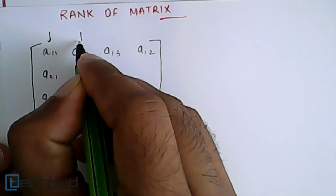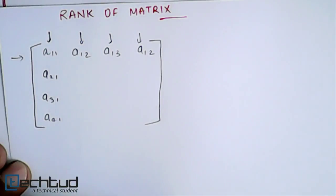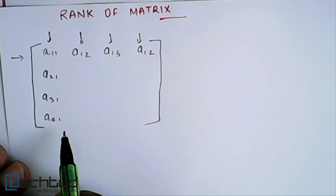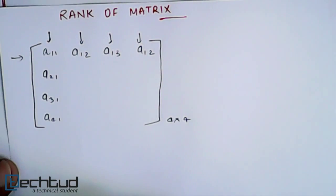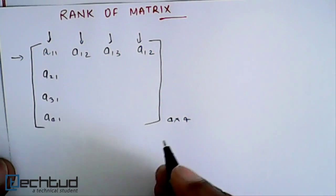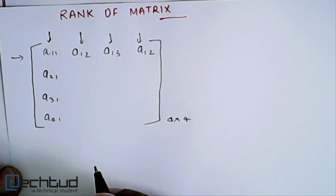These are the column vectors and these are the row vectors. So if the rank is 4 for this 4 by 4 matrix, it means all the vectors, whether row vector or column vector, are independent.